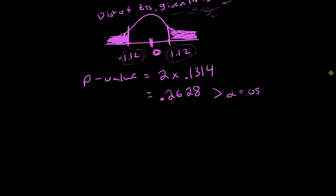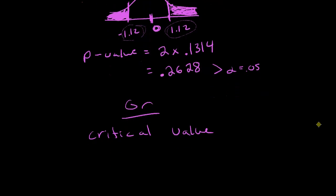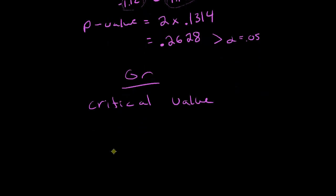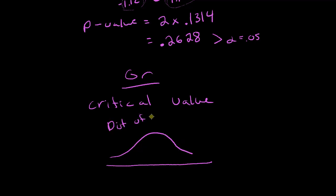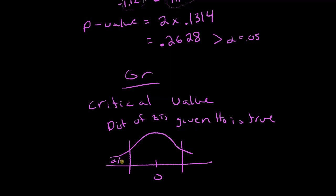Another way you could have done step three — you would pick one or the other — is using critical values. Starting with the distribution of the test statistic given H₀ is true: since this is a two-sided test, we have two critical values and we split alpha into both tails. Instead of 0.05 in one tail, we put alpha divided by two — that's 0.025 — in each tail, because alpha is 0.05.